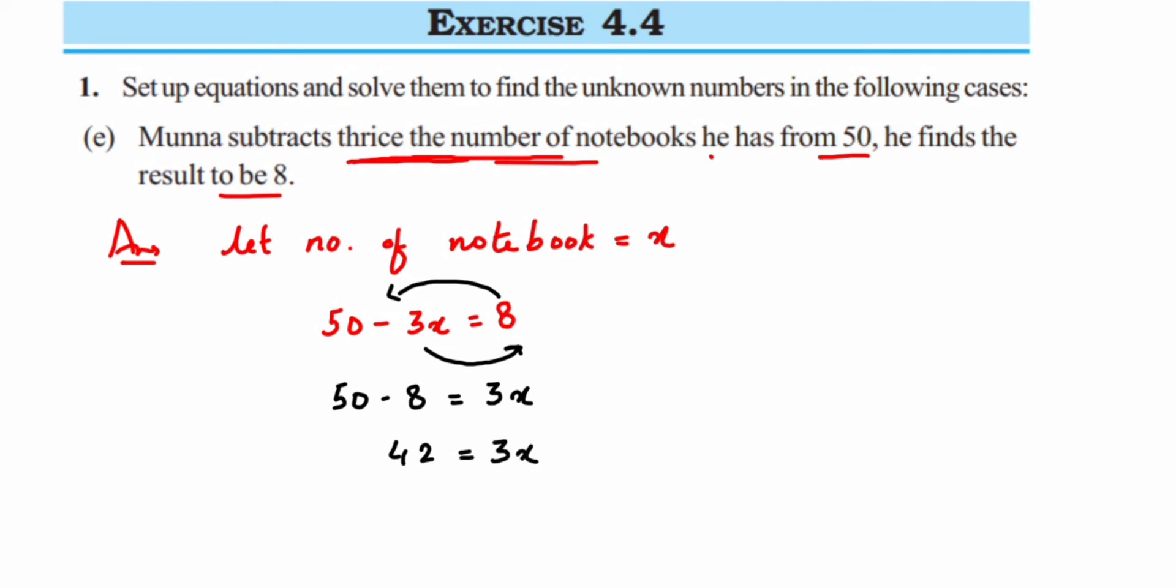See, we want only x, we don't want this 3 here. But 3 is under multiplication with x. When you transpose it to the other side of the equation, multiplication will become division. So from here we can say that x = 42/3. You can also write 42/3 = x, both are the same.